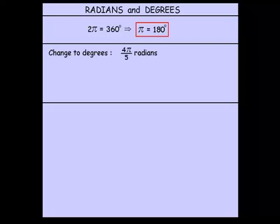So initially, we're just going to change from radians to degrees. So if we have 4 pi over 5 radians, well that is really equal to 4 fifths times pi. And if pi is 180 degrees, then we can say that's really 4 fifths times 180 degrees, which works out to be 144 degrees.